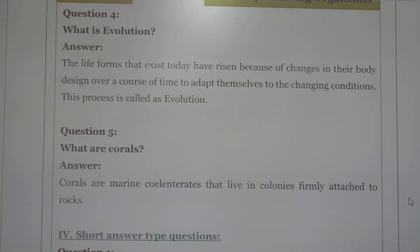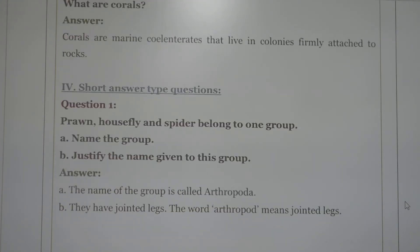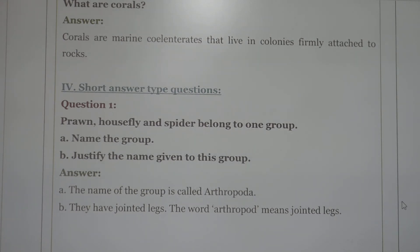What are corals? Corals are marine or ocean organisms — they are coelenterates. Next question: prawn, housefly, and spider all belong to one group — name the group. They all belong to the Arthropoda group because they all have jointed legs — 'Arthro' means jointed legs.